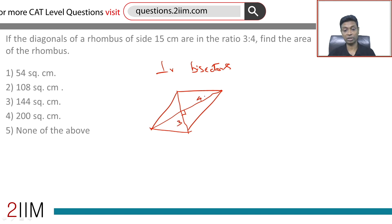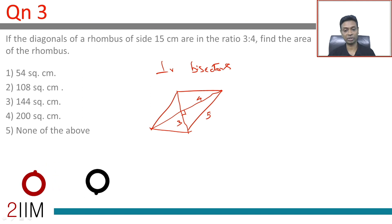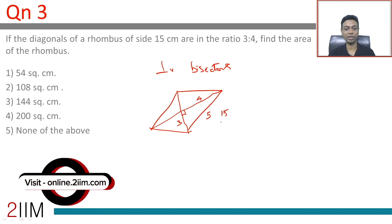It's also in ratio 3 is to 4. This is 5, this 5 corresponds to 15. So the 3 should be 9, the 4 should be 12, or the entire diagonals: 9 plus 9 is 18, 12 plus 12 is 24.